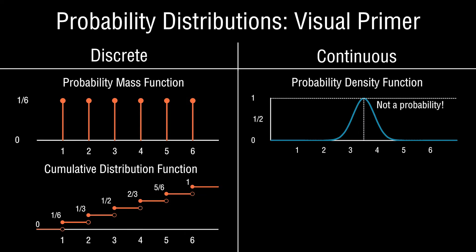There are a couple of ways to reason this. First, the probability densities for other outcomes are also greater than zero, so if densities were truly probabilities, they would sum to greater than one. Additionally, since the probability density function is a measure of probability per unit length, at a specific outcome the instantaneous length is zero, so probability per unit length multiplied by zero gives zero. In the continuous space, to find the probability of an event we define a range of interest and compute the area under the curve.